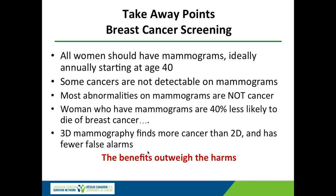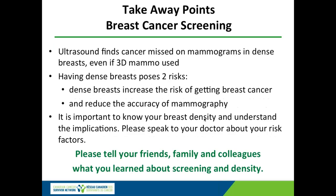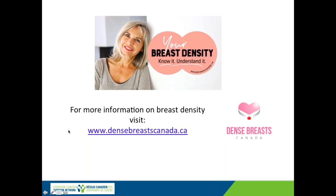The takeaway points: everybody should have mammograms, ideally annually starting at 40, but certainly go as soon as your screening program will allow and as often as they will allow. Some cancers are not detectable on a mammogram. Most abnormalities on mammograms are not cancer, so if you get recalled, please don't panic. Women who have mammograms are 40% less likely to die of breast cancer. 3D mammograms find more cancer than 2D and have fewer false alarms. Ultrasound can find cancer missed on a mammogram in dense breasts even if we use 3D mammography. Having dense breasts poses two risks: you're at a higher risk of getting breast cancer, and the mammogram is less accurate. It's important to know your breast density, understand these risks, and speak to your doctor about your risk factors. For more information, visit www.densebreastcanada.ca.